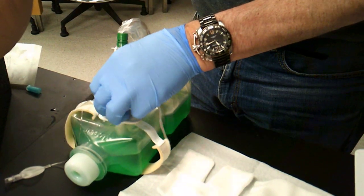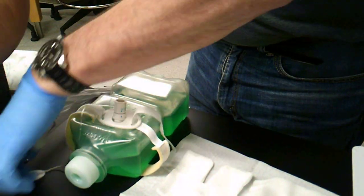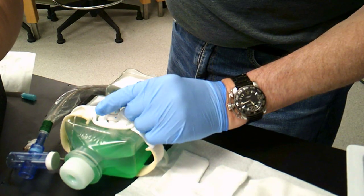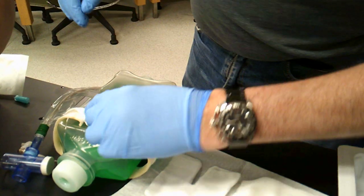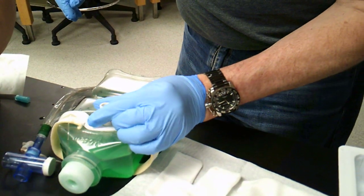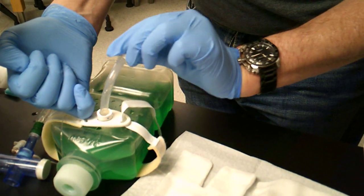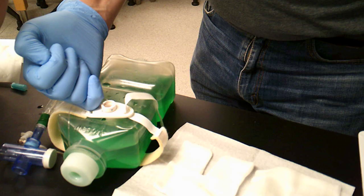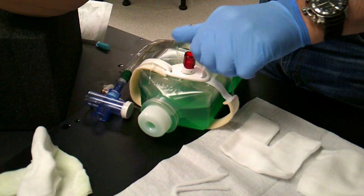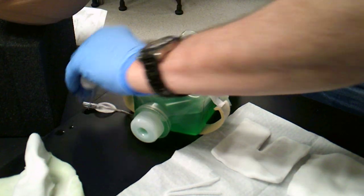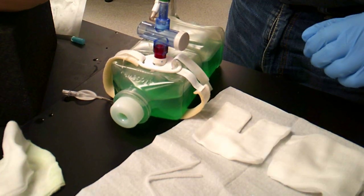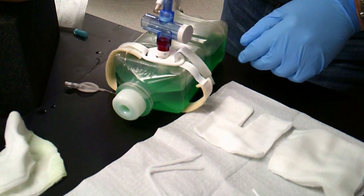Then I want to go ahead and remove my inner cannula. Now, on the Shiley trach, there's a locking mechanism that is there. So, you just turn it. And we can go ahead and let that clean. And we will have a spare inner cannula that we will have. So, now the patient can be ventilated again.